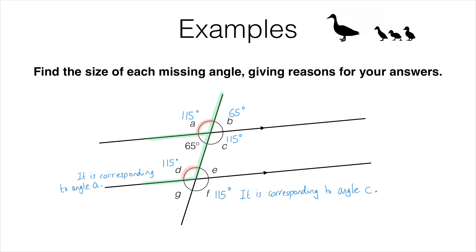Next we're going to take a look at angle E. The obvious way of working this out once you know what D is would be to use the fact that angles on a straight line add up to 180 degrees, but I'm going to show you different ways. First of all, spot that you could use corresponding angles again — here is an F shape, upside down and reflected, but we've still got parallel prongs, and that means these two angles are corresponding. So E is going to be 65 degrees because it is corresponding to angle B.